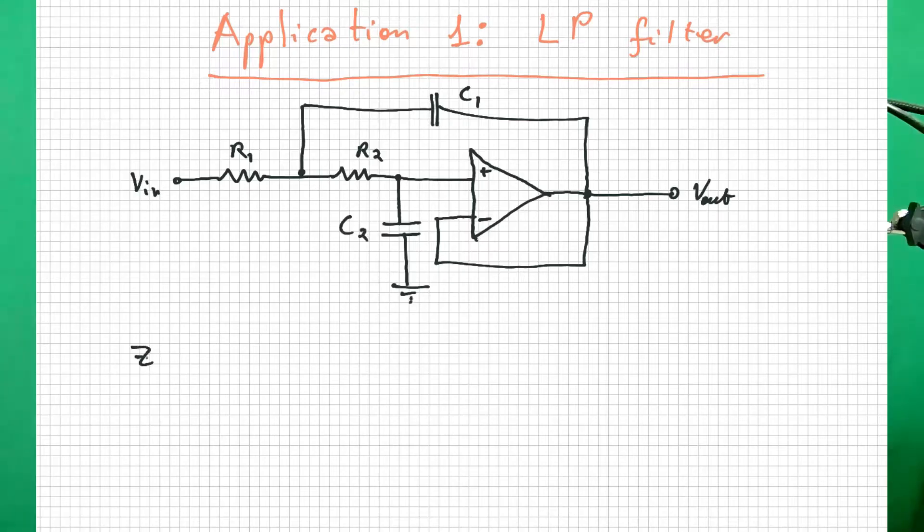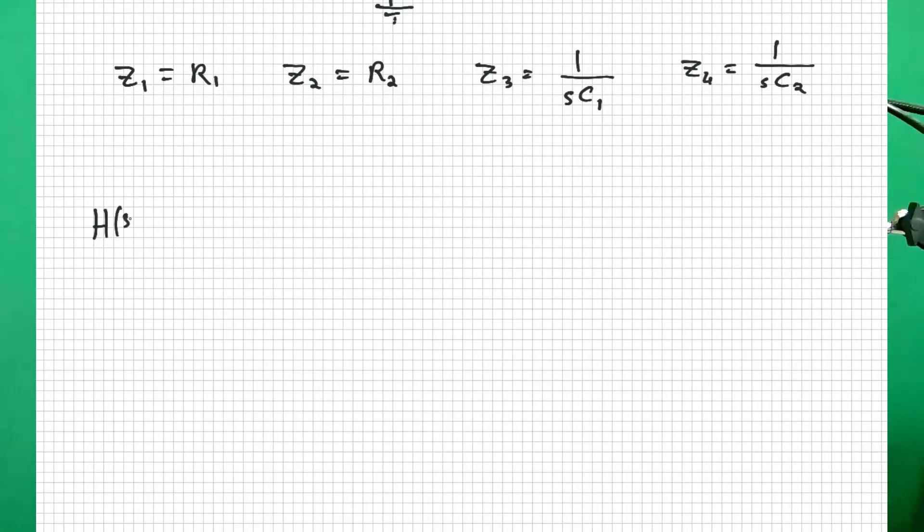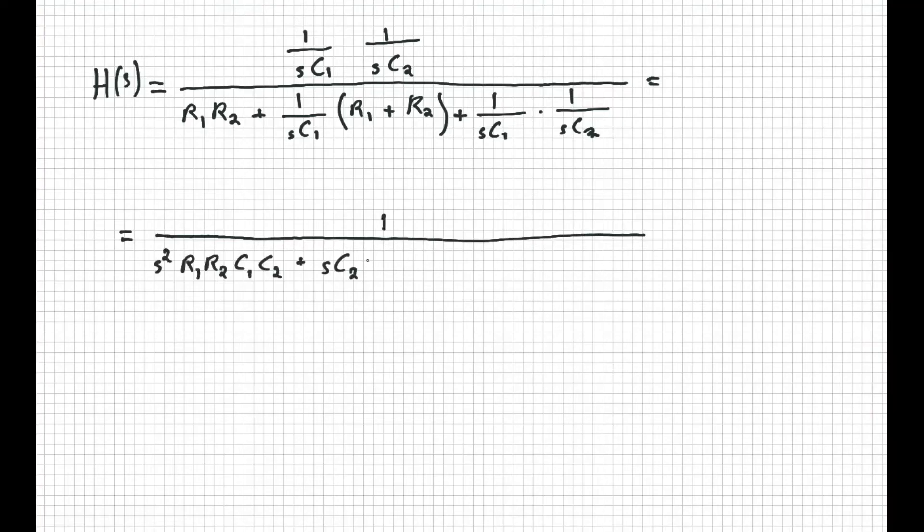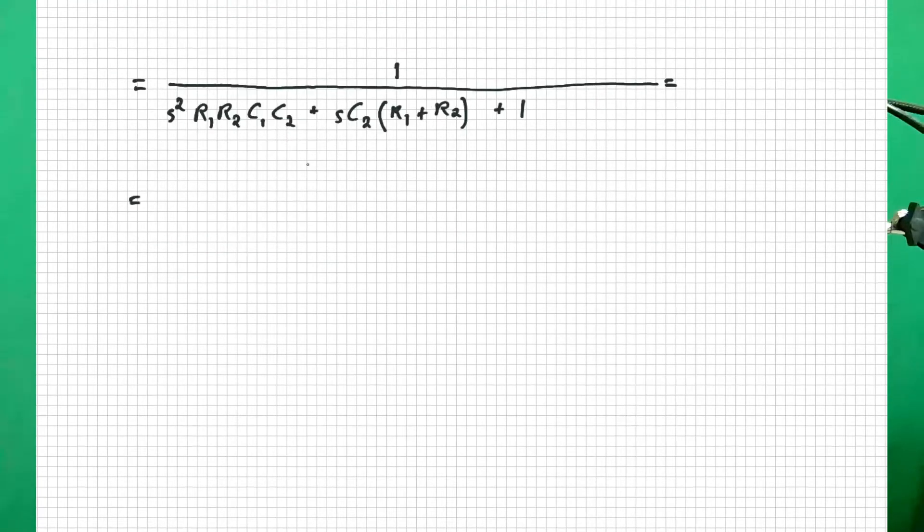The impedances values accordingly will be Z1 equals R1, Z2 equals R2, Z3 equals 1 over SC1, and Z4 equals 1 over SC2. If we now replace these values in the general transfer function, we obtain this, which we can readjust this way, and then this way.